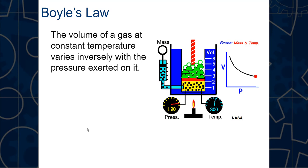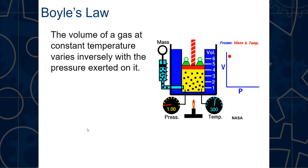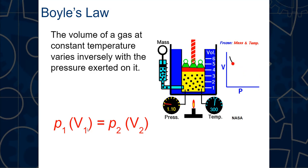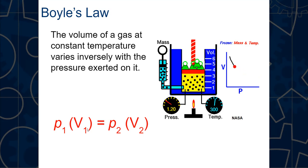Boyle's Law: at a constant temperature, if we increase pressure, the volume decreases — but not proportionally; it follows a curve. As pressure increases, the volume decreases more and more. The formula is P₁ × V₁ = P₂ × V₂. It doesn't matter which state is labeled 1 or 2, as long as you keep pressure and volume paired together.